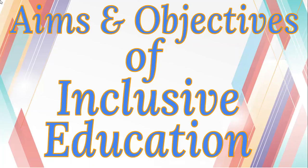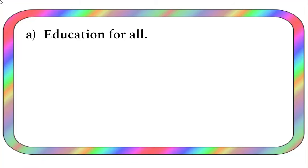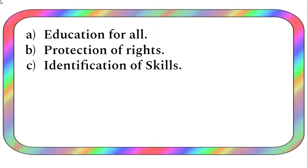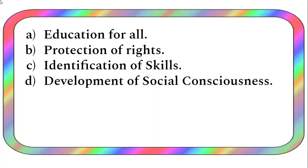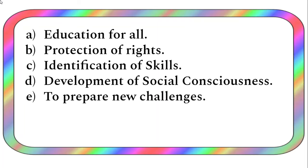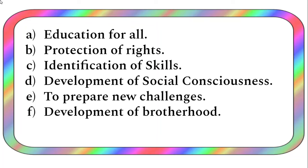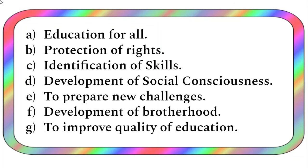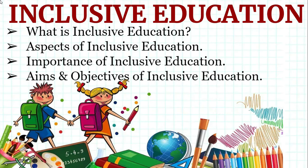The aims and objectives of inclusive education are: A) education for all — no partiality among children; B) protection of rights; C) identification of skills; D) development of social consciousness shared by individuals within a society; E) to prepare for new challenges; F) development of brotherhood; and G) to improve the quality of education.